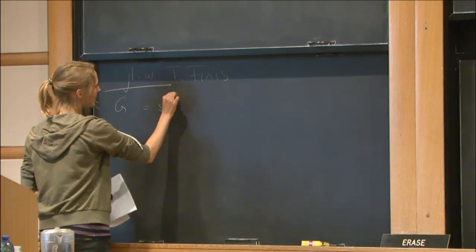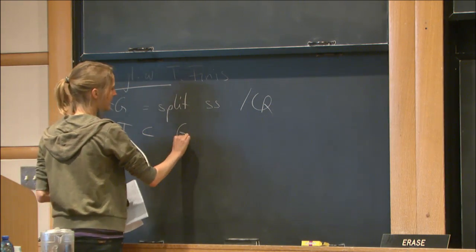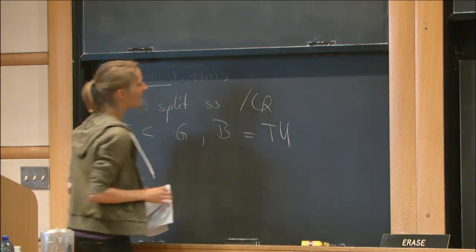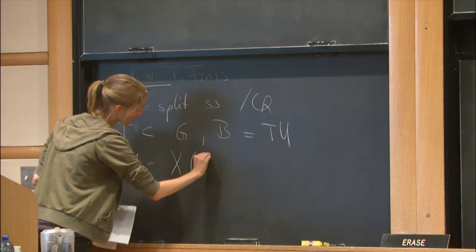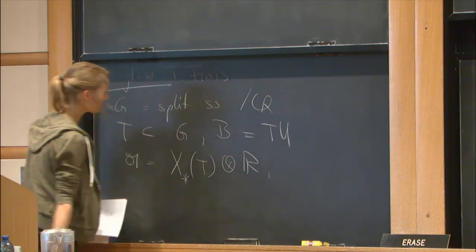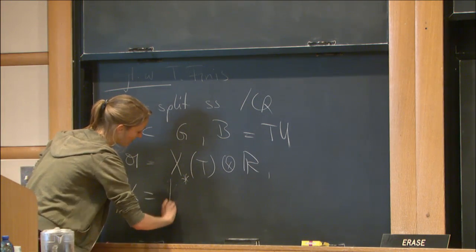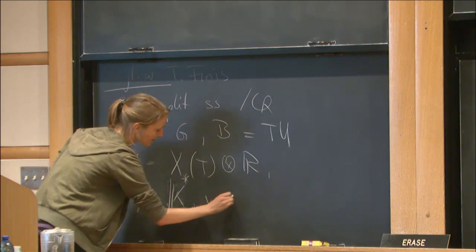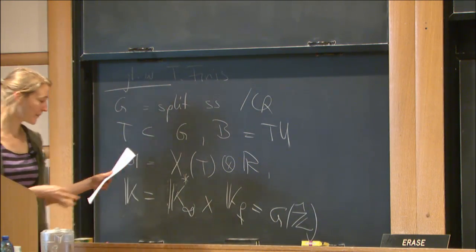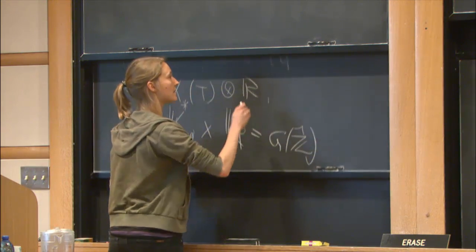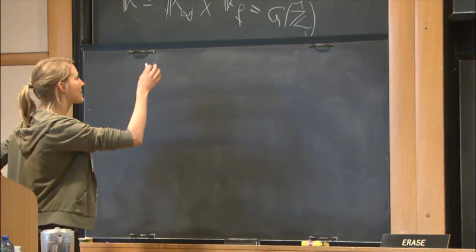G will be a semi-simple group split over Q, T is the maximal torus, and B is the Borel. I write A for the space of co-characters of the torus. K will be the fixed maximal compact at the infinite place, and at the other places we take G of Z-hat. The classical question is to count the number of cuspidal representations.